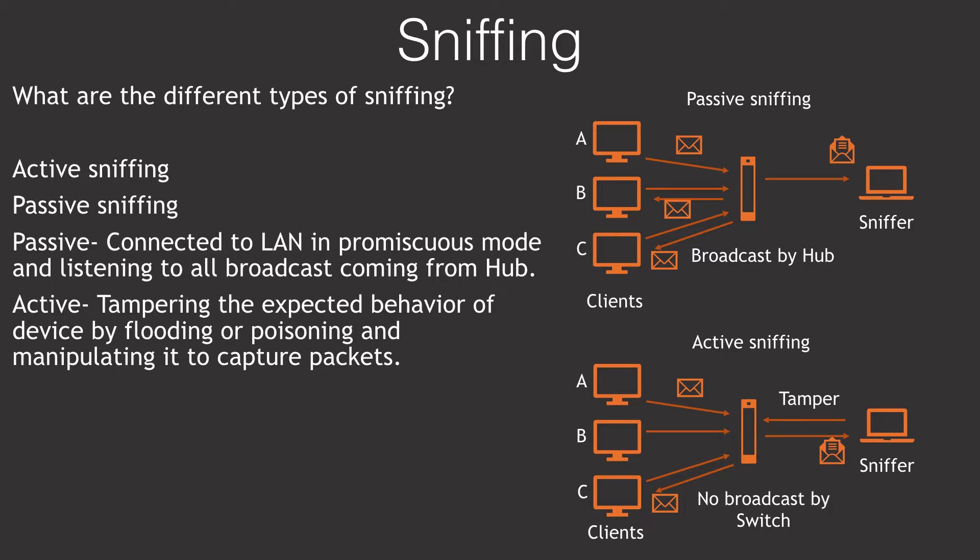The next challenge for bad actors was that they had no means to capture any communication unless they could tamper with the switch's intelligence. And they did it — they invented ARP spoofing and other flooding techniques that easily fooled the switch. Either the switch got a spoofed MAC and IP combination on the ARP table, or it simply stopped making intelligent decisions and started broadcasting like a hub after being flooded with incorrect ARP updates. That's when the bad guys could capture and intercept other devices' packets again — and that is active sniffing.